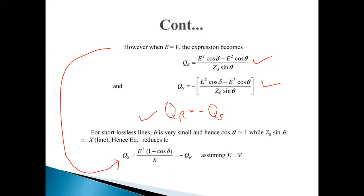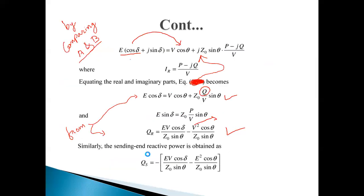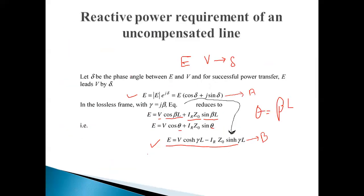When parameters like theta are very small and near about 1, R-zero times sin(theta) is approximately equal to X. This concludes the theory of an uncompensated line. Thank you so much.